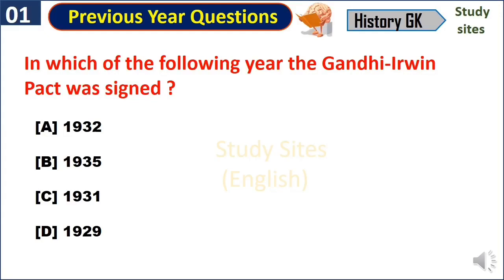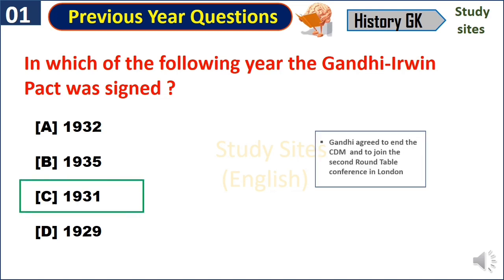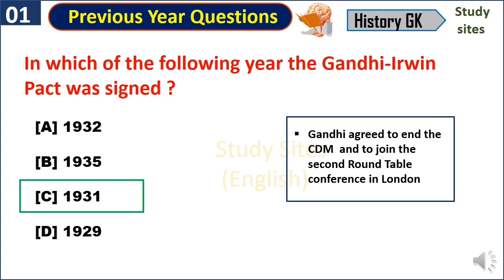In which of the following year was the Gandhi-Irwin Pact signed? 1931. By this agreement, Gandhi agreed to end the civil disobedience movement and to join the second round table conference in London.